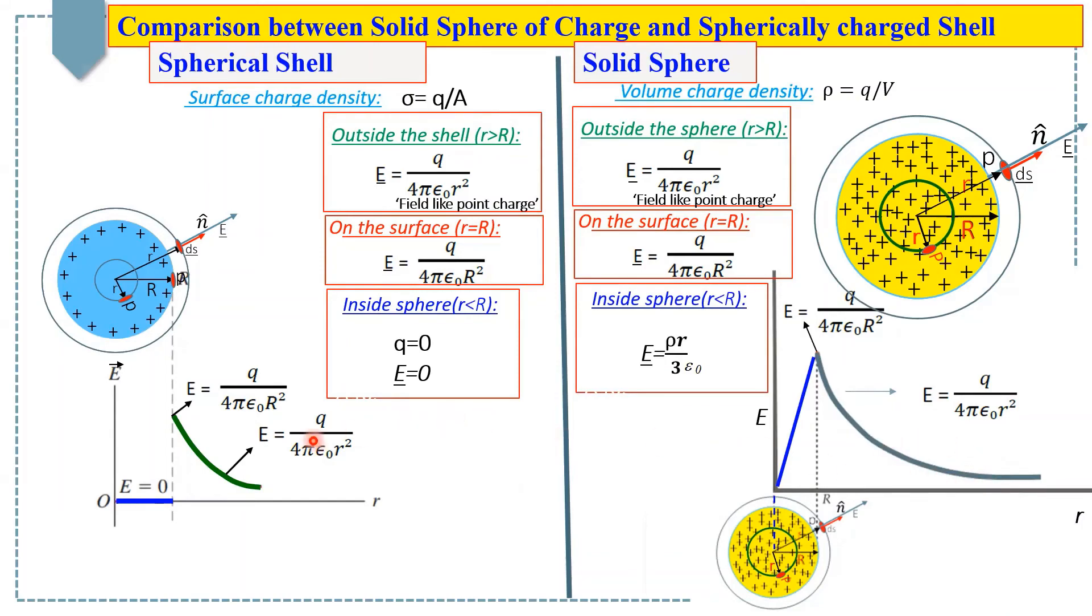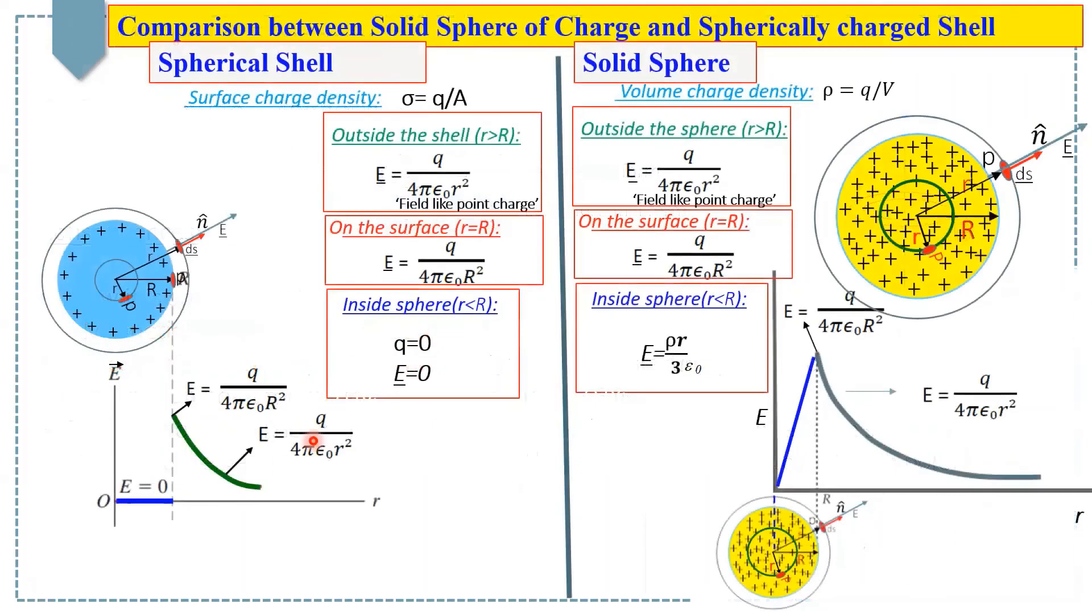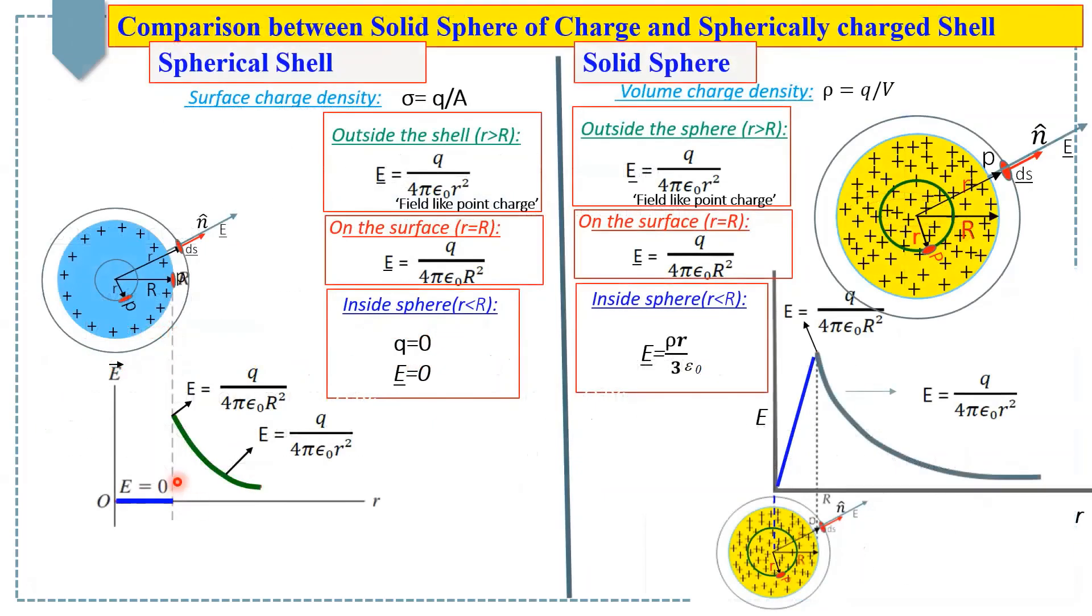Now, let's look at the graph for a shell case where the electric field on the surface of shell is the same as in the case of the solid sphere, and the electric field is decreasing in the same way as was the case of the sphere.